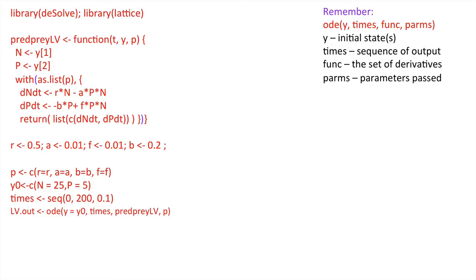We've called it predator-prey-Lotka-Volterra and we're defining it as a function here. You've got to be very careful with the brackets. We're saying N is the very first element of Y which we've just set. We're saying P is the second element of Y which we've defined.